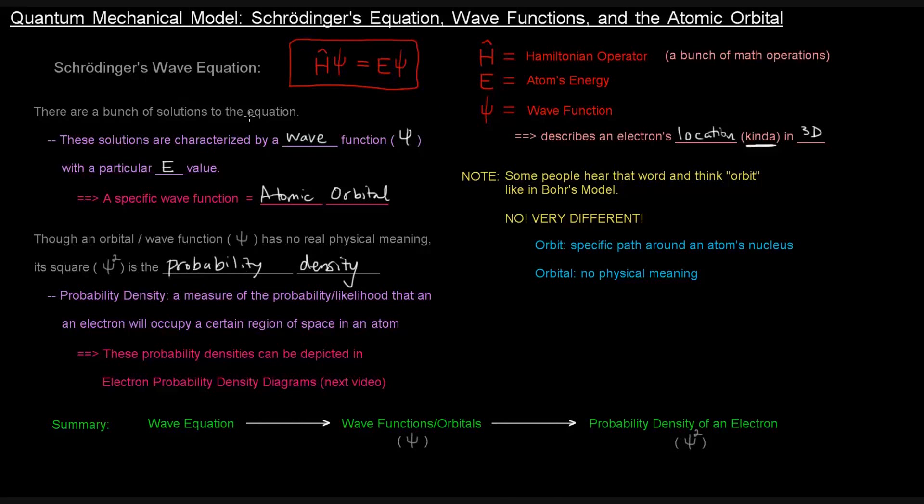So, essentially, we start with Schrödinger's wave equation, and that is solved. And the solutions give you the wave functions, or the orbitals. And if we square the wave function, or the orbital, we get the probability density of an electron, which tells us the likelihood that an electron will occupy a certain region of space in an atom.